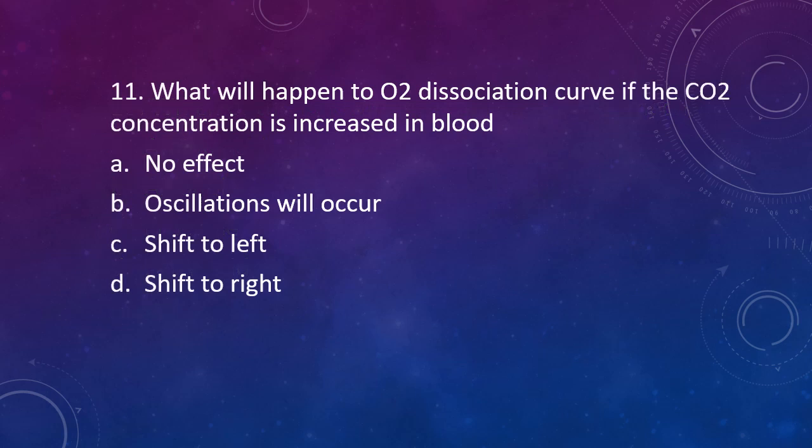Question 11. What will happen to oxygen dissociation curve if the carbon dioxide concentration is increased in blood? Option A - No effect, Option B - Oscillation will occur, Option C - Shift to left, Option D - Shift to right. The correct answer is Option D, the curve will shift to right.